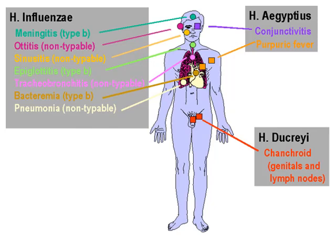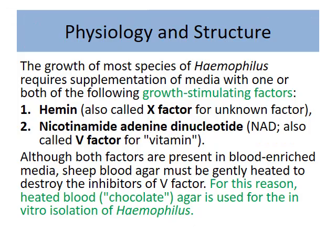Haemophilus aegyptus causes conjunctivitis and can also cause Brazilian purpuric fever. Haemophilus ducreyi causes a painful ulcer on the genitals and lymph nodes called chanceroid or chancre — terms we will discuss again when talking about STIs and STDs.